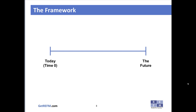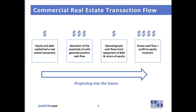The general framework we are representing in a pro forma is that of a timeline, where on the left we have today, also known as time zero, and as we move to the right we are moving into the future. For a commercial real estate transaction, equity and debt fuel the transaction on the left, and moving right, the asset operates and generates positive cash flow. Those cash flows fund the repayment of debt and the return of invested equity, and the excess cash flows are profits to the equity investors.